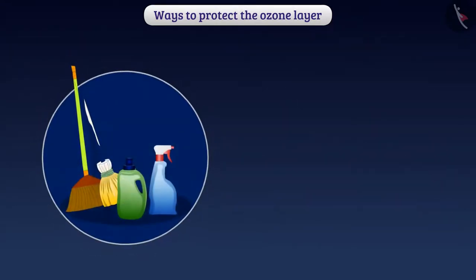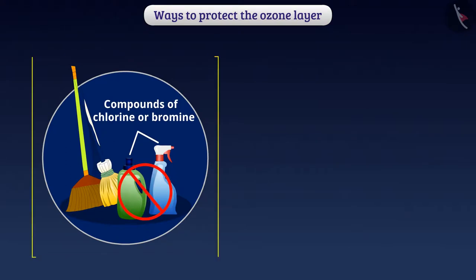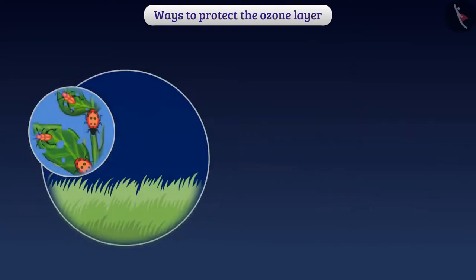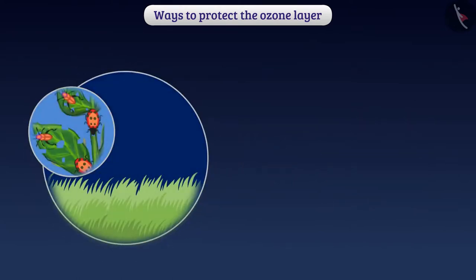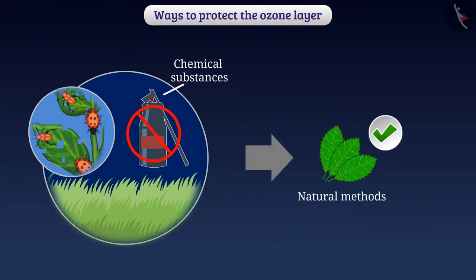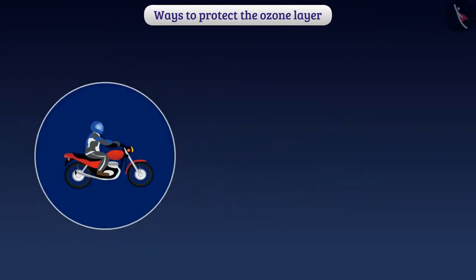Many substances used for cleaning purposes are compounds of chlorine or bromine. We can reduce their use. Instead of using such substances, we can use other natural substances like lemon. For the control of pests and grasses, instead of chemical substances, natural methods can be used. We can reduce the use of vehicles.